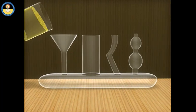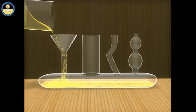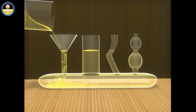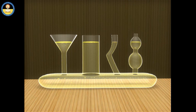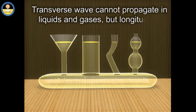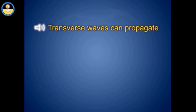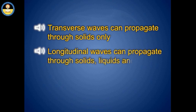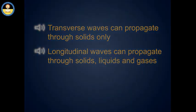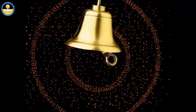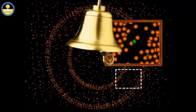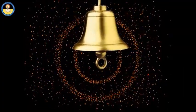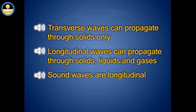We know that the shape of liquids and gases can be easily changed — if the shape of a liquid or gas is changed, it does not regain its original position. Therefore, transverse waves cannot propagate in liquids and gases, but longitudinal waves can. Hence, transverse waves can propagate through solids only, whereas longitudinal waves can propagate through solids, liquids, and gases. When sound waves pass through a medium such as air, the particles of the medium move back and forth along the direction of propagation of the sound wave. Therefore, sound waves are longitudinal waves.